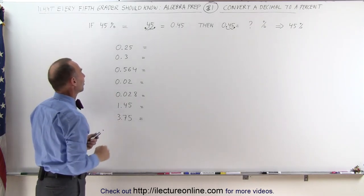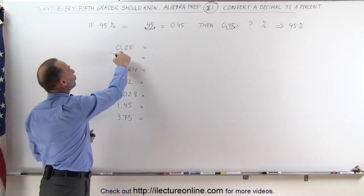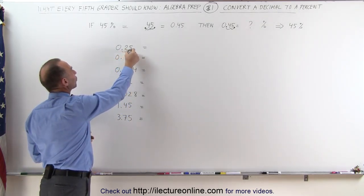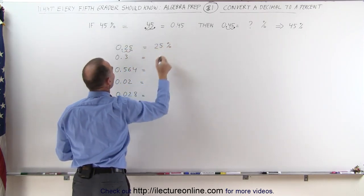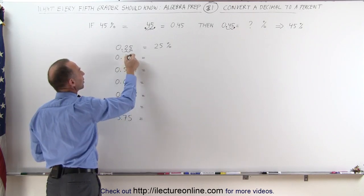Here, let's try it on these exercises. 0.25, let's move the decimal place over twice, and this becomes 25%.